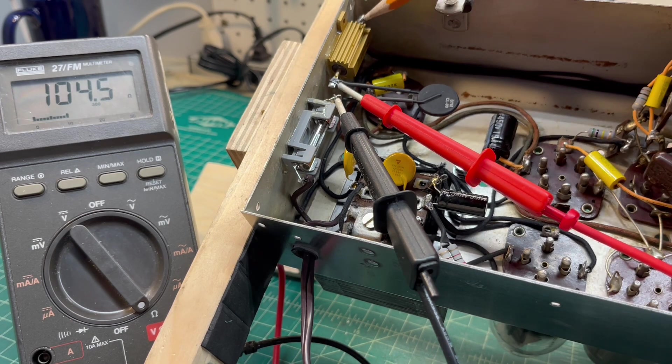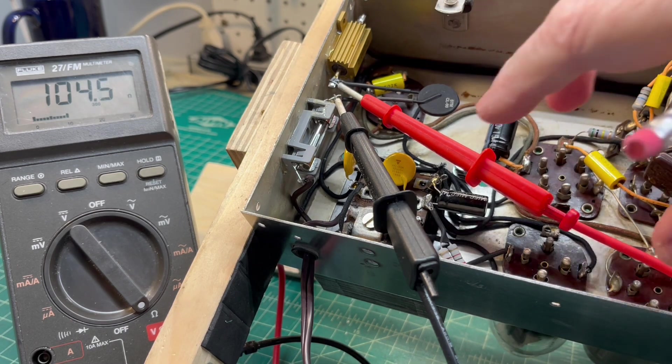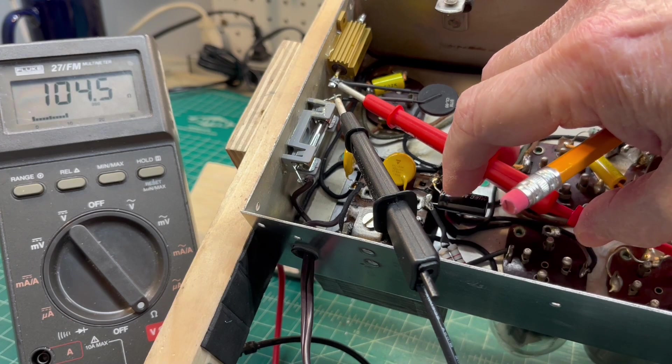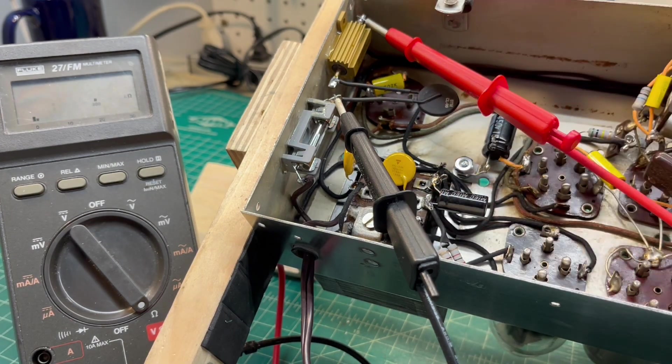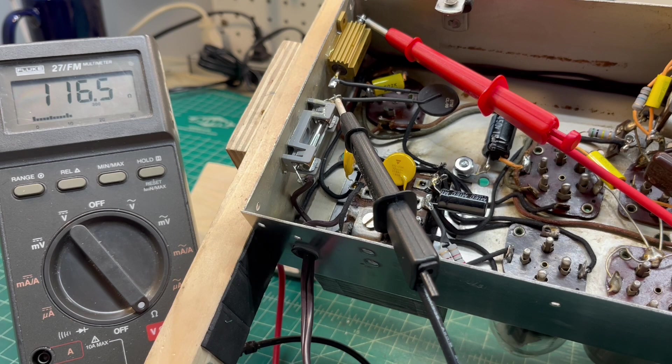A 12 ohm resistor here, so we should see 12 plus the 105. And that gets us pretty close there, around 117 ohms of DC resistance.